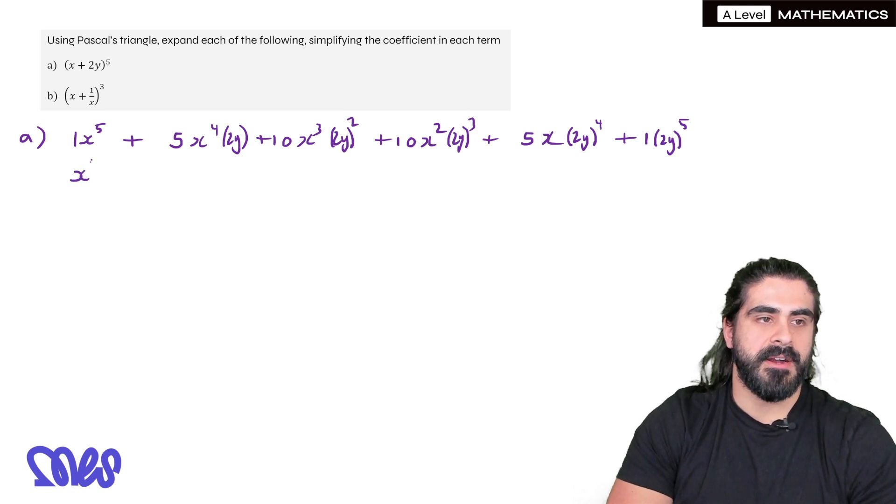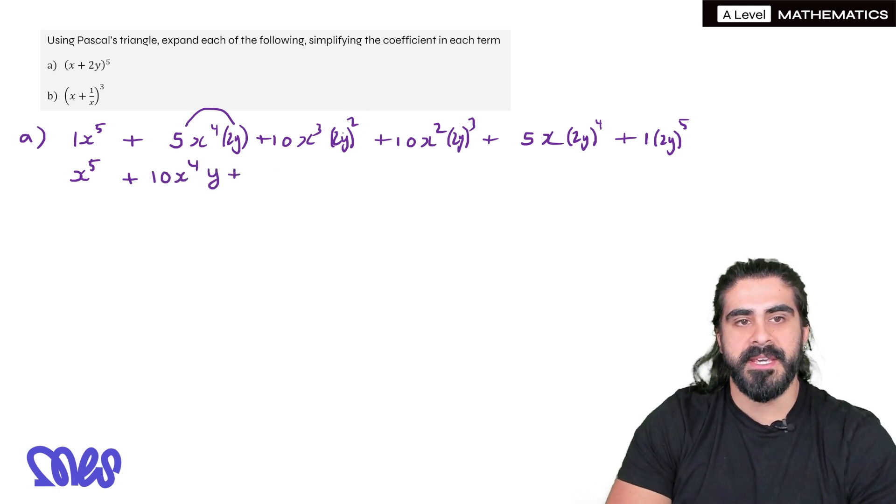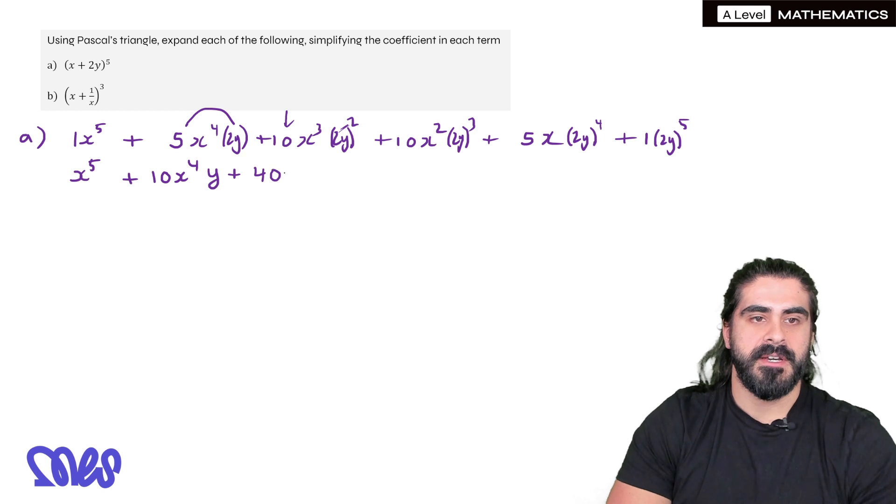So now we simplify. We have x⁵ + now here we have 2 times 5, so 10x⁴y + be careful here you have to do 2² first. So 2² is 4 times 10 is 40x³y² + 2³ is 8 times 10 is 80x²y³.